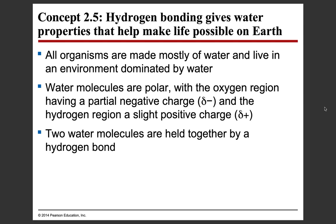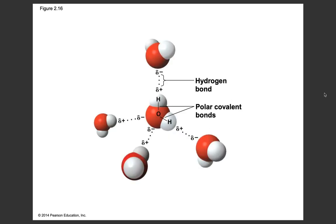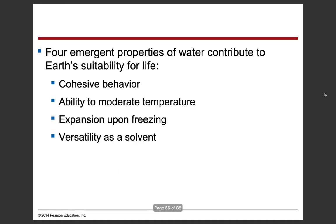Pretty much when in doubt, if we're talking about water, throw in hydrogen bonds and you're probably going to be right. The hydrogen bonds are represented by dotted lines because they are extremely weak and can be made and broken several times a second. The hydrogen side is slightly positive and the oxygen side is slightly negative, so opposites attract and that forms our hydrogen bonds. Polar covalent bonds are more rigid and hold the H₂O molecule itself together.